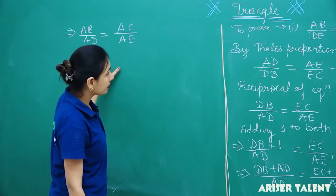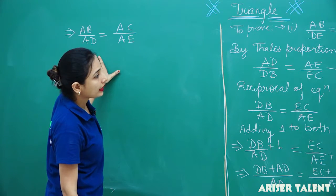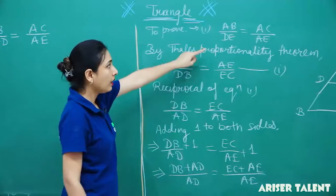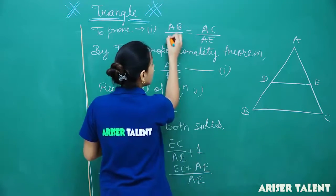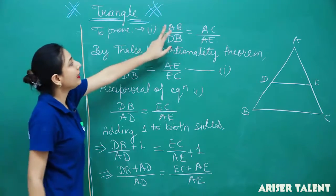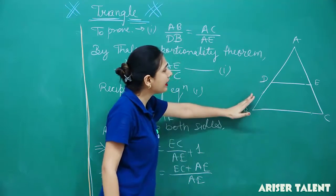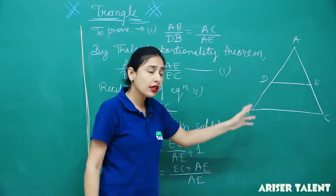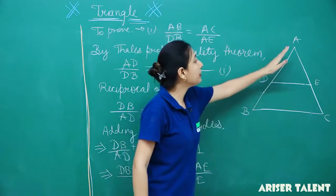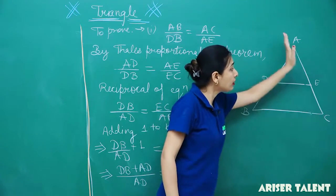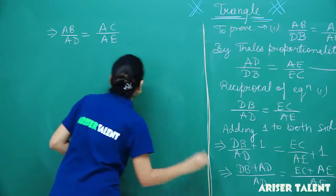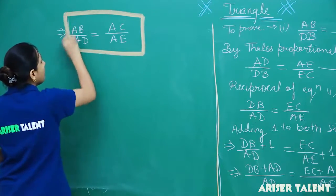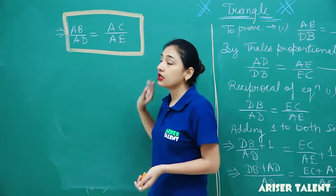Okay, students, correct it here — it will be AD by DB. It is saying that AD by DB equals AE by EC, and by this we prove that the full side ratio AB by AD equals AC by AE. So you have proven here that AB by AD equals AC by AE.